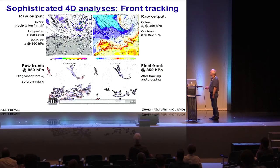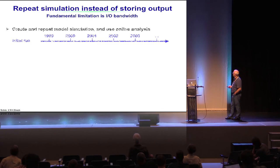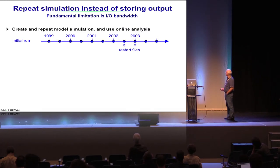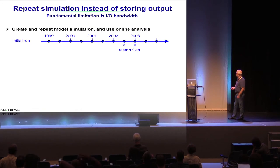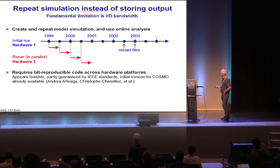One would like to use a different paradigm: repeating the simulation instead of storing the output becomes more effective. The idea, discussed within the CRCLIM project for some years, is to create and repeat the model simulation. During the first simulation, one stores restart or checkpoint files, maybe every year or more often. The rerun can then be done in parallel, starting from checkpoint files on different hardware. If done on different hardware, a bit-reproducible architecture is required - because without bit reproducibility, if Stefan Rudi-Süli follows a cold front across simulation segments, that cold front will change.